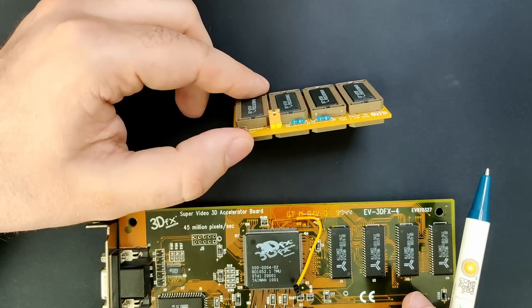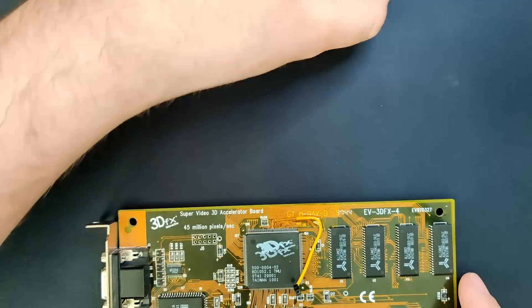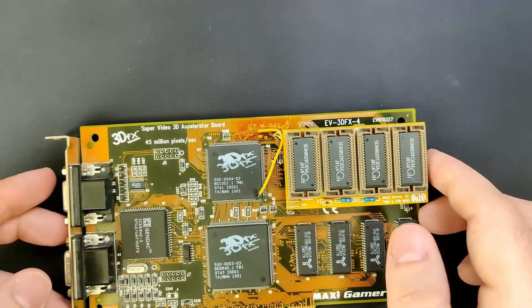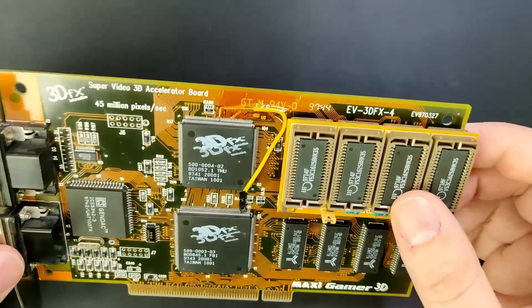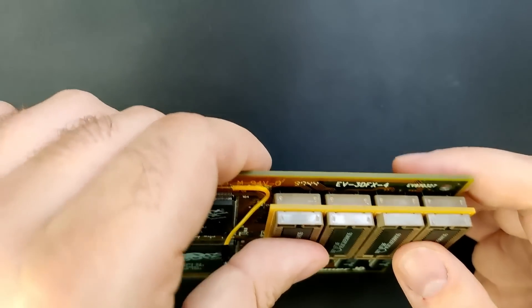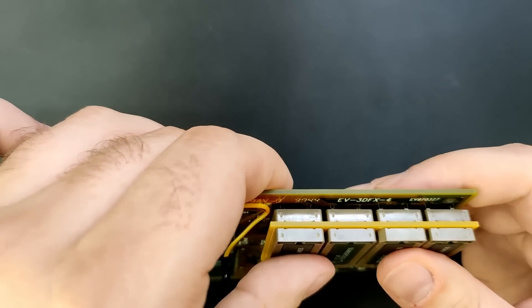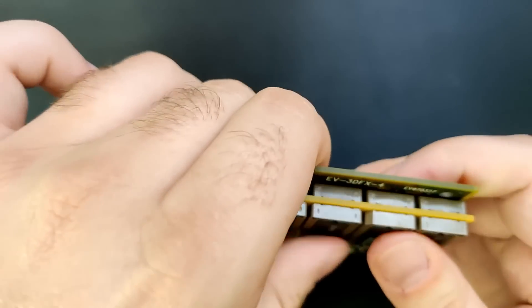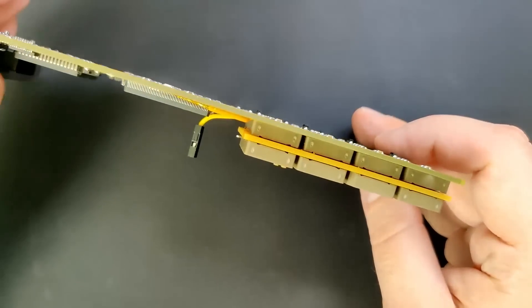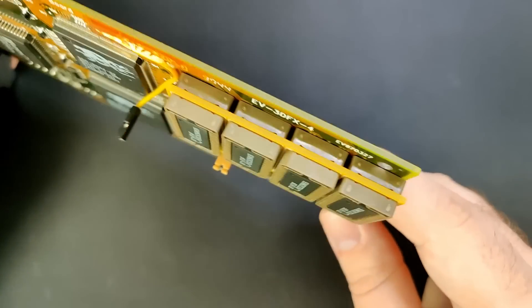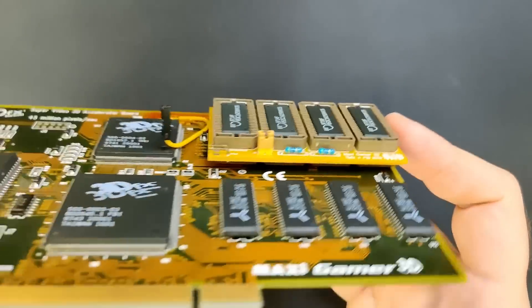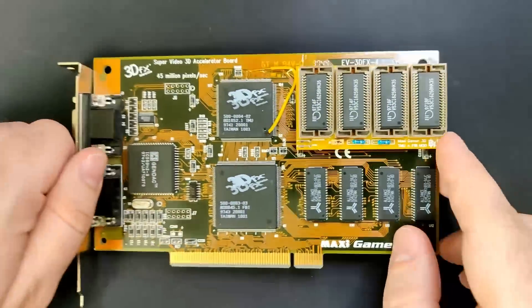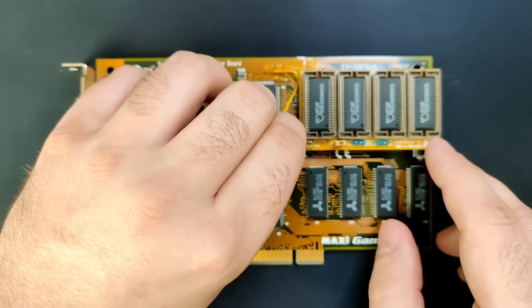All we have to do now is to attach the PCB to the Voodoo card. Hopefully, the sockets line up with the top row of the memory chips. Time to find out. It does require some pressure, but I'm positively surprised and delighted that the mod attaches to the Voodoo card perfectly. Have a look at this. The PCB is now firmly attached. Nothing is moving and it doesn't fall off when I turn the card around. Wow, I'm really relieved. Now it only has to work.